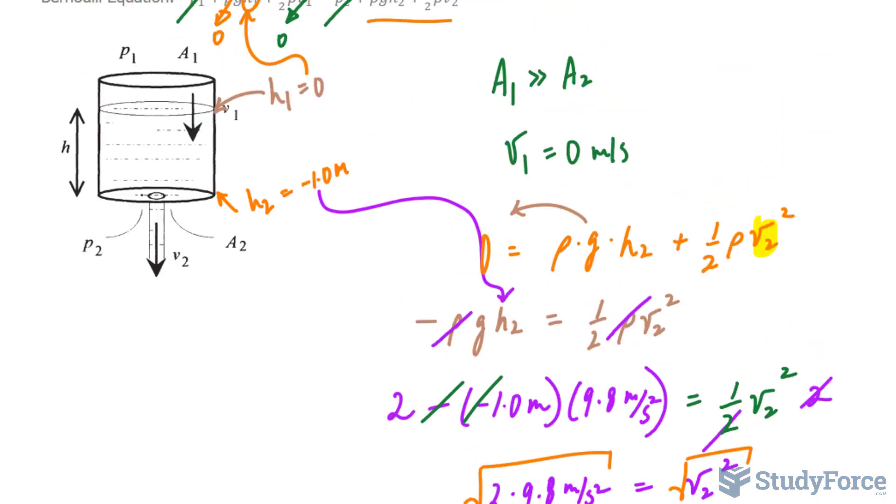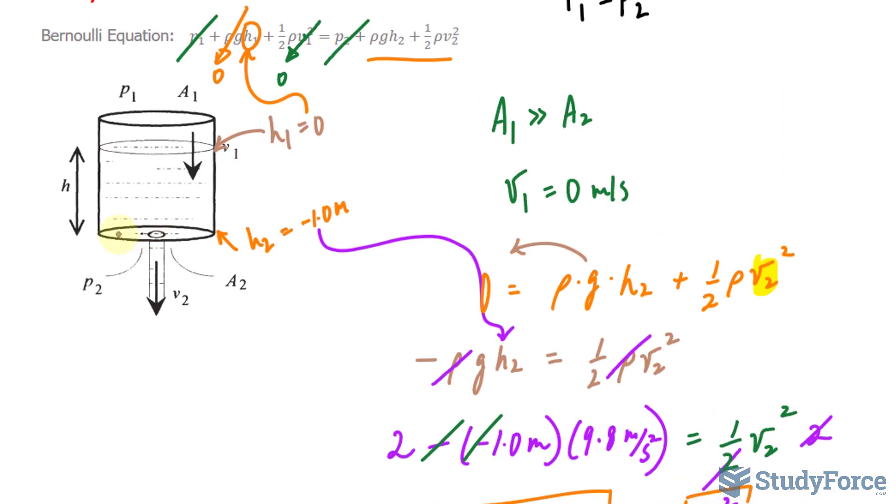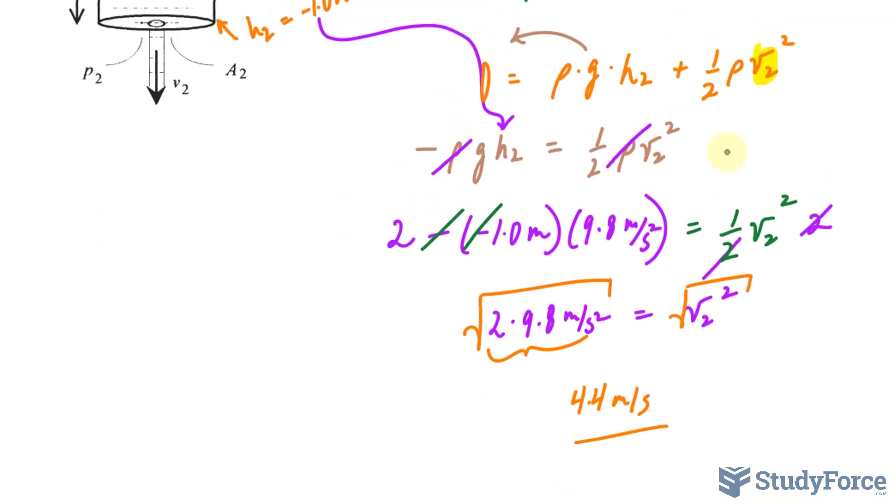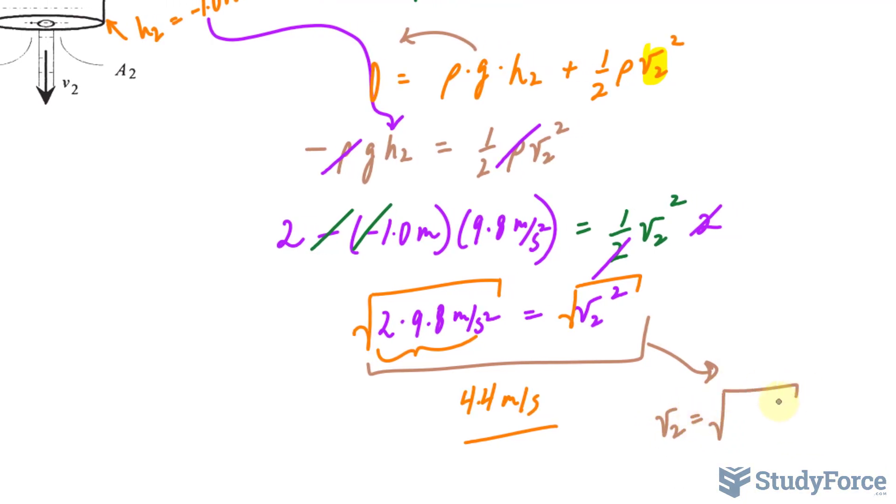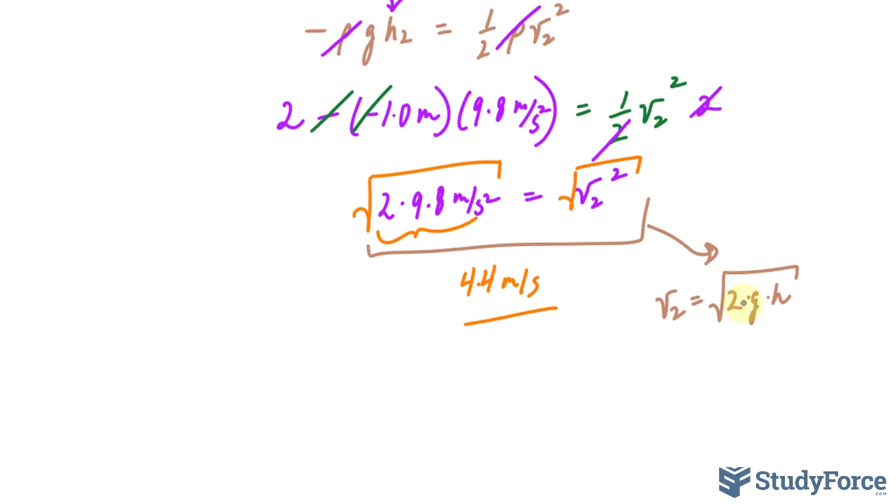So that's the velocity at which this water is leaking out of this tank. And what we've done here, having created this equation, and I'll write it in its generic form where we have V sub 2 is equal to the square root of 2 times G times H, is actually a very special formula.